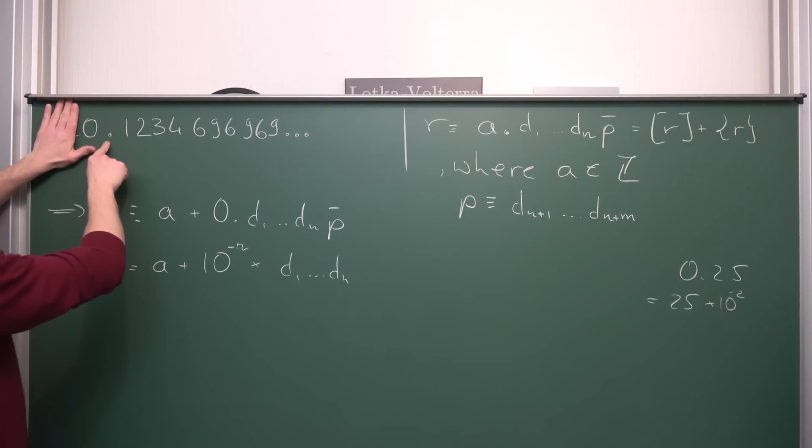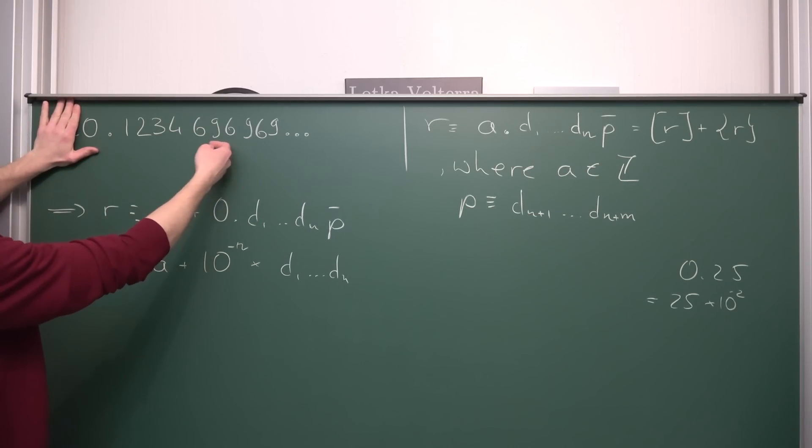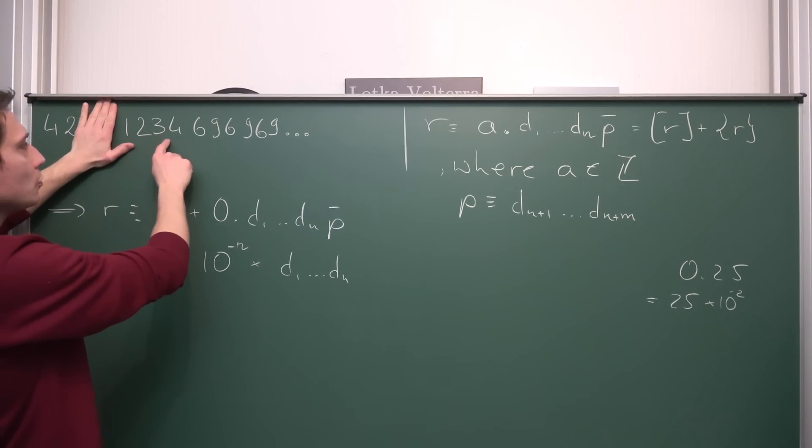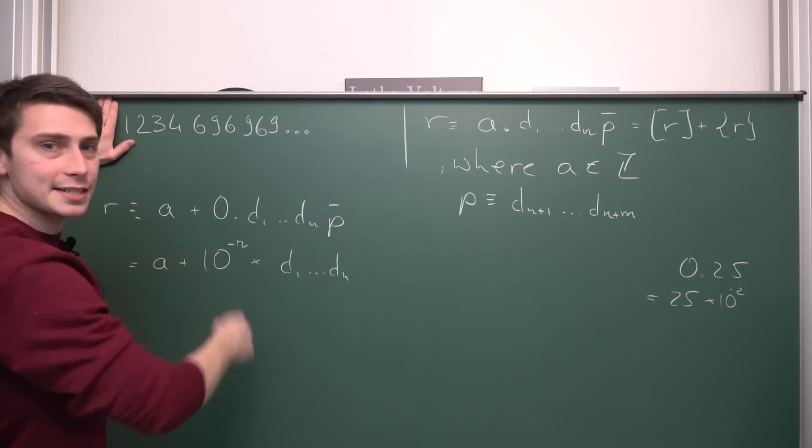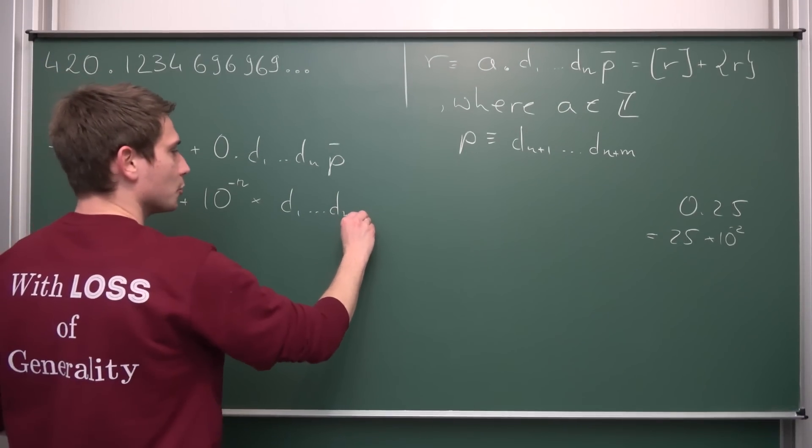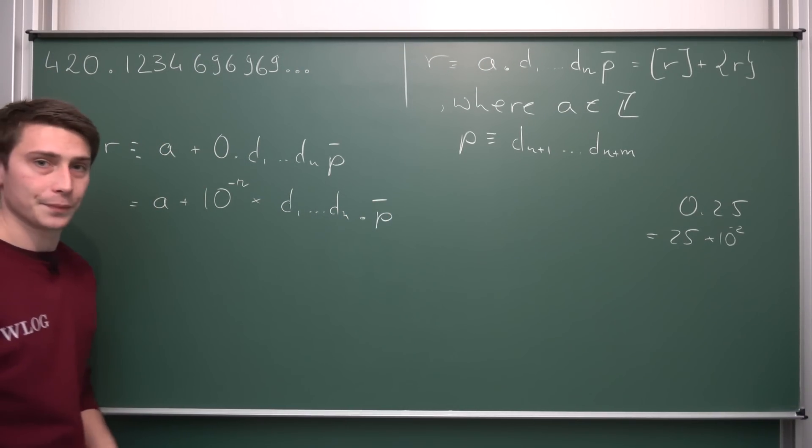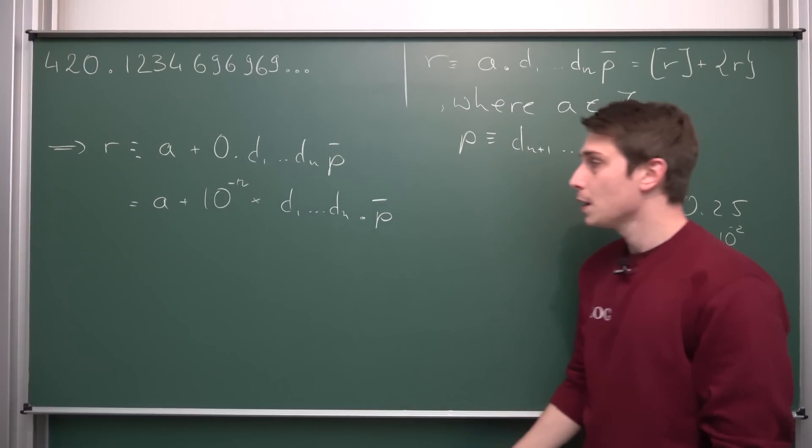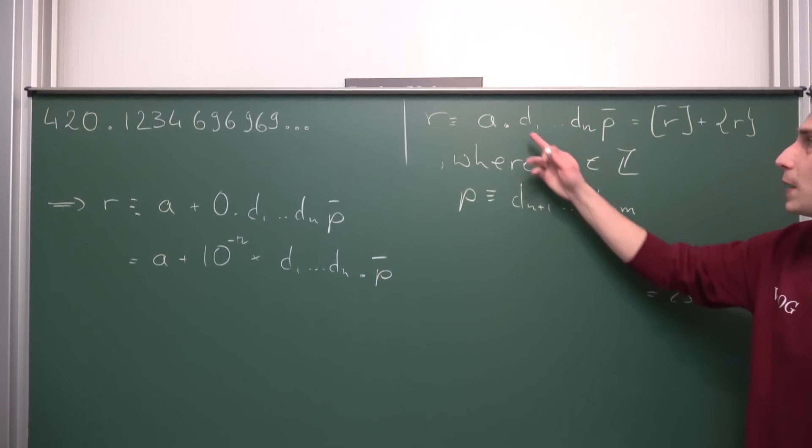Meaning we had two decimal places right here, and here in our generalized case, we have n decimal places, giving us A plus 1234, so 1234 dot 696969 in the process. So dot P and then with our little periodic bar on top.